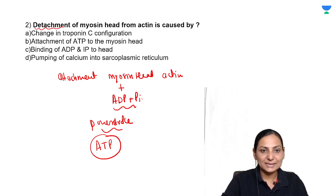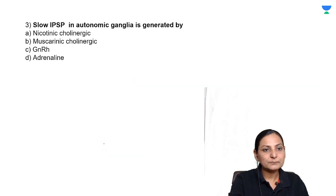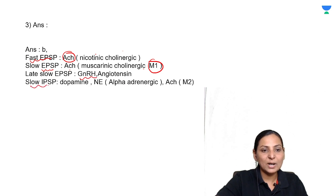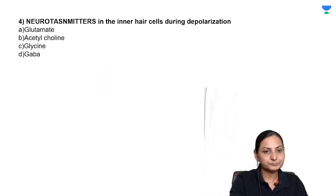Slow IPSP in autonomic ganglia is generated by? So IPSP and EPSP they are examples of the local potentials developing - inhibitory post-synaptic and excitatory post-synaptic. Slow IPSP is caused by muscarinic cholinergic. You can get a fast EPSP - acetylcholine when it's acting on nicotinic cholinergic receptors. A slow EPSP with acetylcholine acting through muscarinic M1 receptors, a late slow EPSP by GnRH, and a slow IPSP by dopamine and norepinephrine.